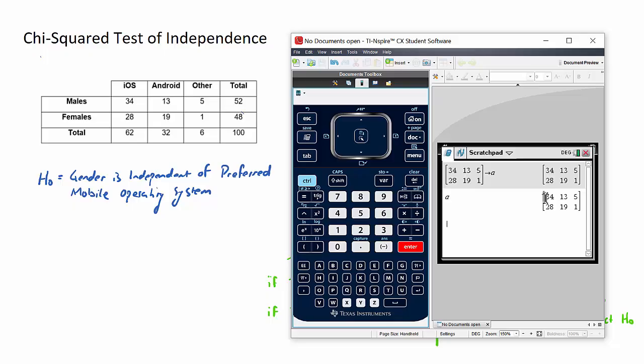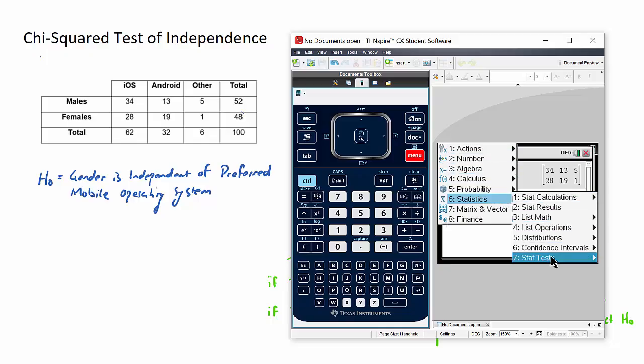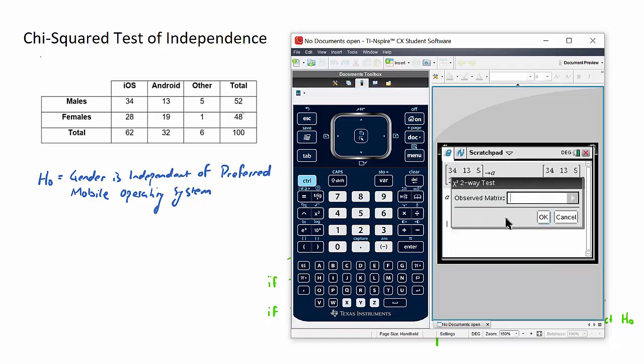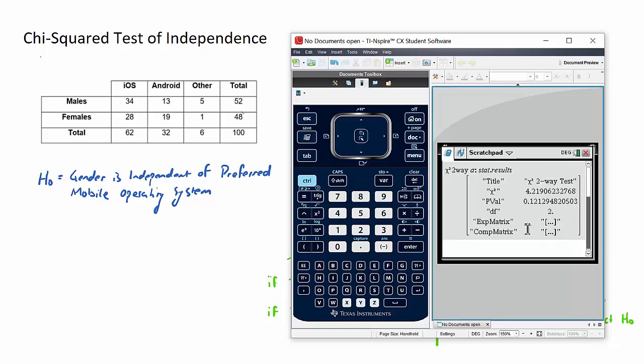Now let's go ahead and do the stat calculation. Menu, number six, statistics, number seven, stat tests. And we're looking for this one near the bottom, number eight, chi-squared two-way test. It asks for which matrix we're going to test it against. And this is where that letter A comes in. Press OK. And here are some good pieces of information.